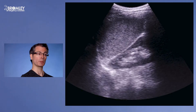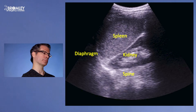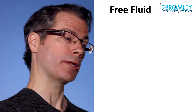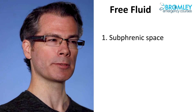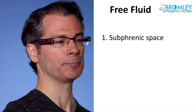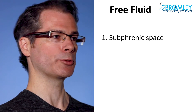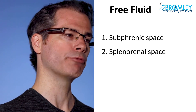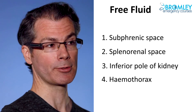Here's an image of a normal left upper quadrant. We have the spine at the back, the spleen at the front, the kidney in between, and the diaphragm towards the patient's head. Just like with the right upper quadrant, there are several areas where free fluid can collect. The main area in the left upper quadrant is actually above the spleen, in the subphrenic space between the spleen and the diaphragm. We also look between the spleen and the kidney — the splenorenal space — the inferior pole of the kidney, and slide up to look for hemothorax on the left.